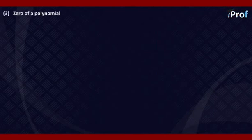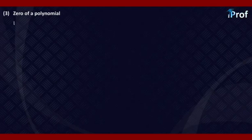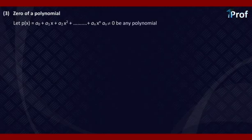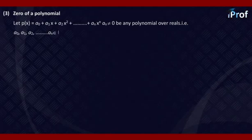After defining polynomials, we now go over to what is the zero of a polynomial. To know the concept of zero of a polynomial, we define it as follows. Let P(x) equal to A0 plus A1x plus A2x squared, and so on up to An·x raised to the power n, where An is not zero, be any polynomial over reals. That is, the coefficients A0, A1, A2, A3, and An all belong to the set of real numbers.